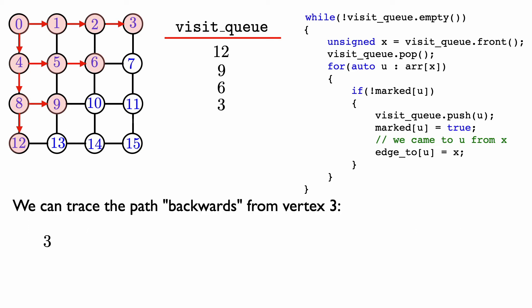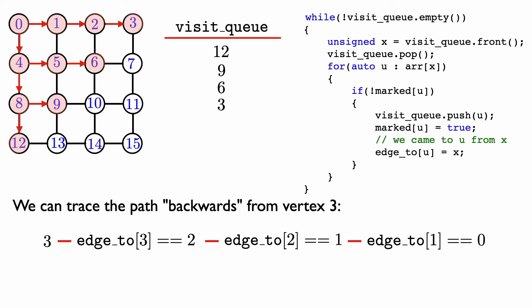Let's see how we can reconstruct this path. We reconstruct the path by working backwards from vertex 3 using the edge2 array. We arrived at vertex 3 from edge2[3], which equals 2. We arrived at vertex 2 from edge2[2], which equals vertex 1. And we arrived at vertex 1 from edge2[1], which equals 0. So we trace the path backwards to find the shortest path: it goes from vertex 0 to vertex 1 to vertex 2 to vertex 3.